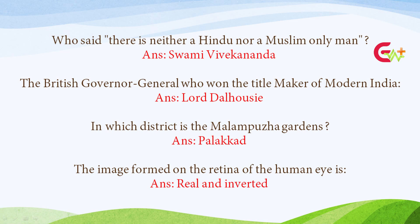Answer: Swami Vivekananda. The British Governor General who owned the title 'Maker of Modern India'? Answer: Lord Dalhousie. In which district is the Malampuzha Gardens? Answer: Palakkad.